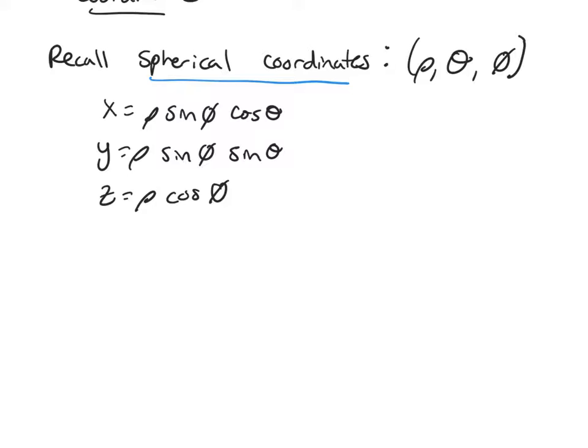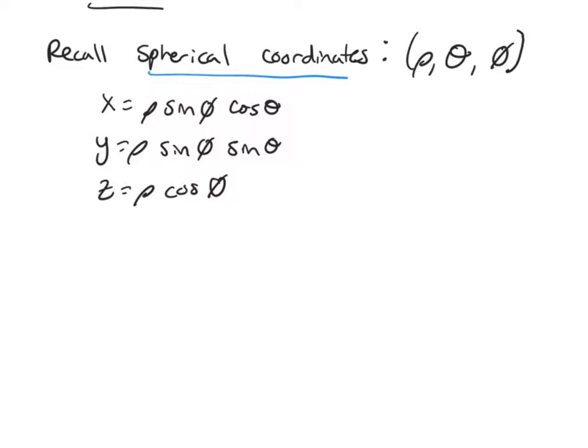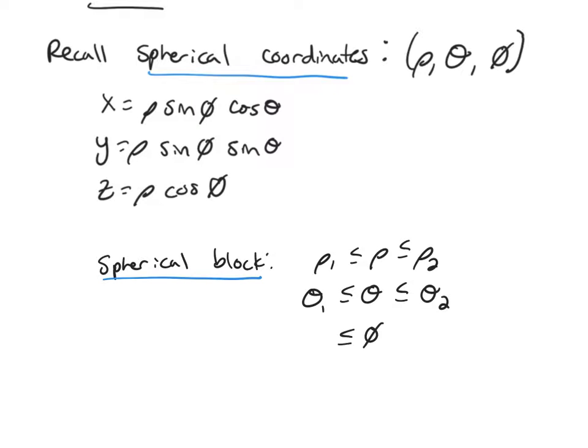So then we can talk about a spherical block. Just like we talked about a cylindrical block, it's given by constant bounds on all my variables: ρ between ρ₁ and ρ₂, θ between two fixed values, and φ also between two fixed values.